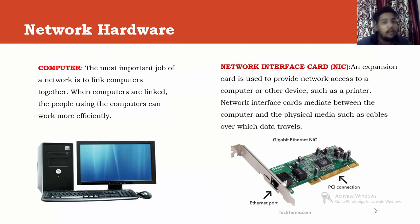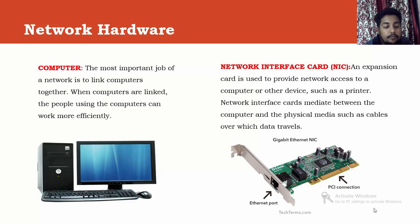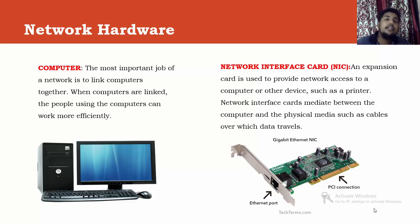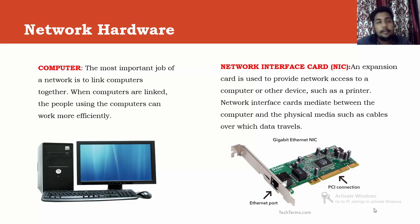Now we will discuss network hardware. The first and most important hardware in a network is the computer. When computers are linked together, people can work more efficiently. Computers connected to a network do not have to be of the same type — for example, one computer may be Windows and another Mac. For sharing a file, you do not need the same type of computer or operating system. The file will transfer to you whether or not you support the same operating system.